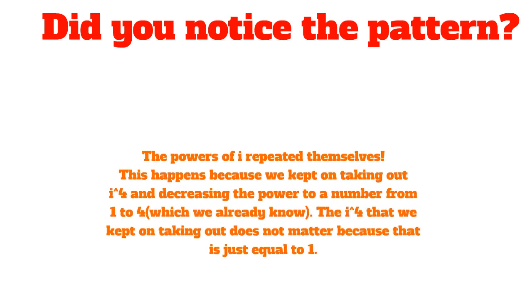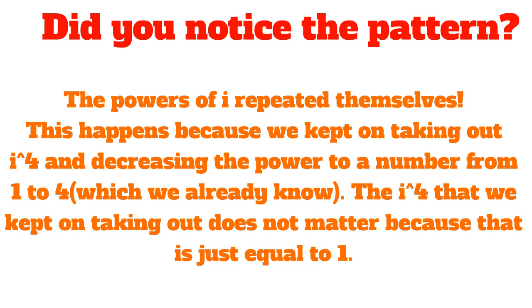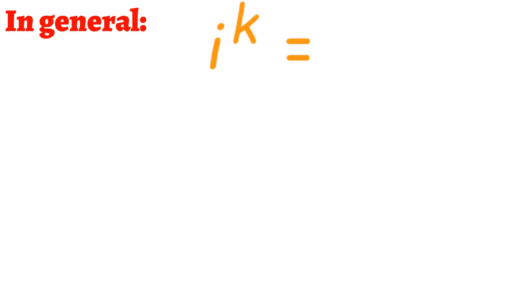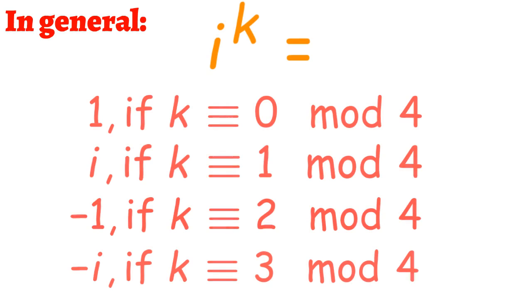Did you notice the pattern? The powers of i repeated themselves. This happens because we kept on taking out i to the power of 4 and decreasing the power to a number from 1 to 4. The i to the power of 4 that we kept taking out does not matter because that is just equal to 1, so it does not change the product. In general, i to the power of k is equal to 1 if k is congruent to 0 mod 4; equal to i if k is congruent to 1 mod 4; equal to negative 1 if k is congruent to 2 mod 4; and equal to negative i if k is congruent to 3 mod 4.